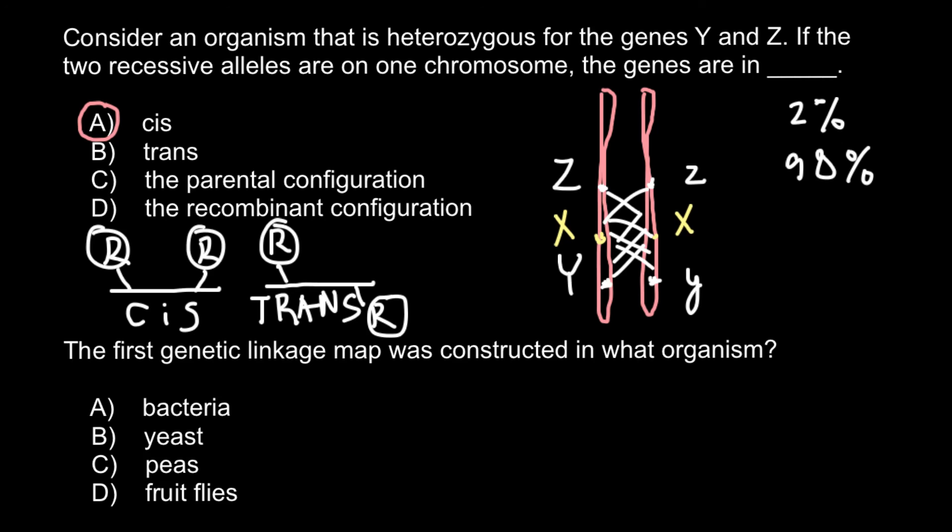So the correct answer is D. The first genetic linkage map was constructed in fruit flies, using fruit flies as a model organism. And this is all for today.